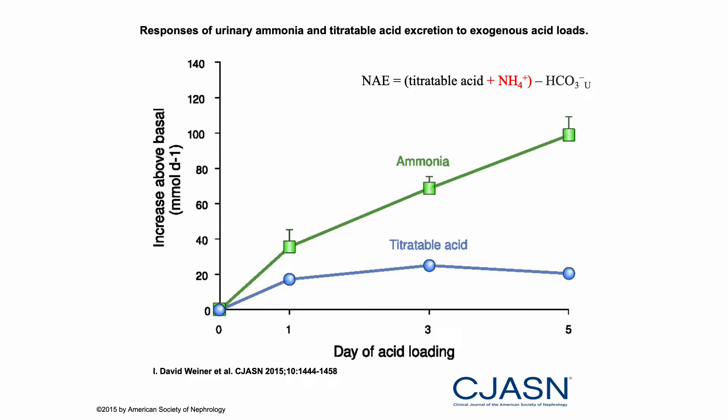There are three components to net acid excretion: first is titratable acidity, and the second is ammonium — ammonia NH3, when it binds to hydrogen, becomes ammonium NH4 plus. All filtered bicarbonate should be reabsorbed under normal circumstances, and any bicarbonate loss is equal to hydrogen gain and vice versa. After acid loading, titratable acid, which is mainly phosphate, doesn't rise by much — the heavy lifting is always done by ammonium. This is how the body fights chronic acidosis.